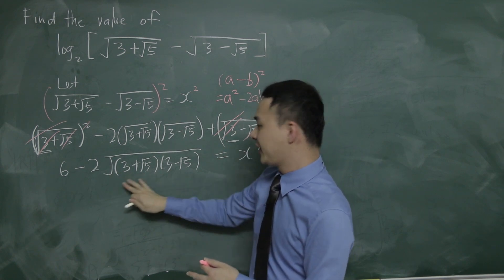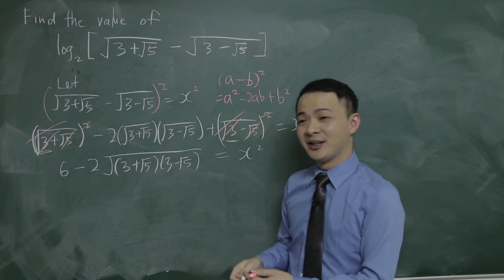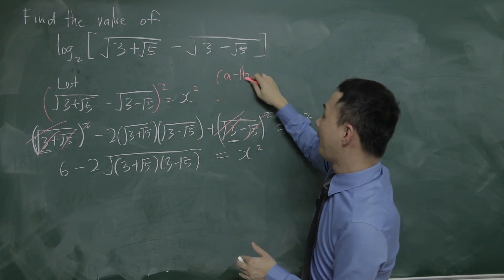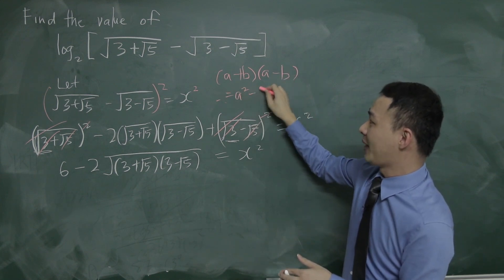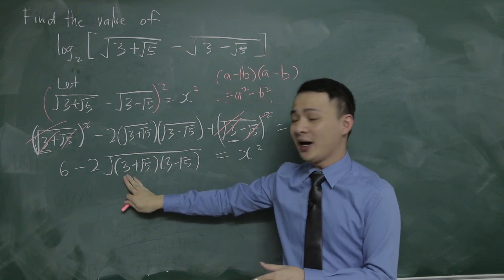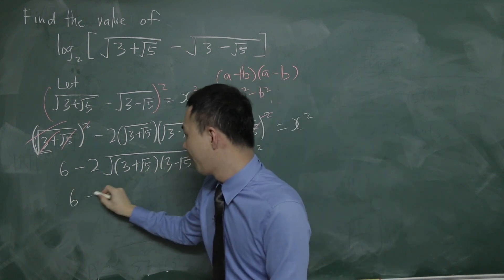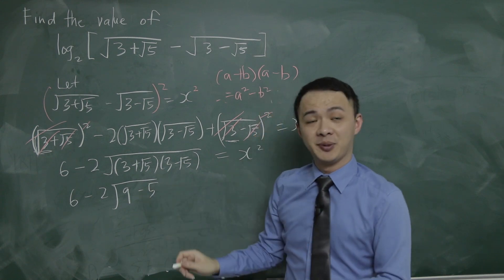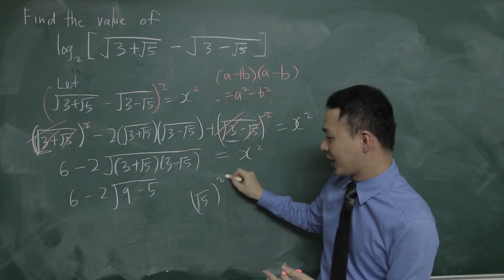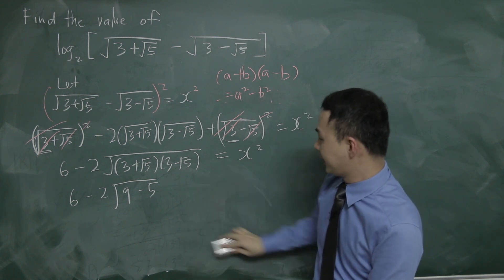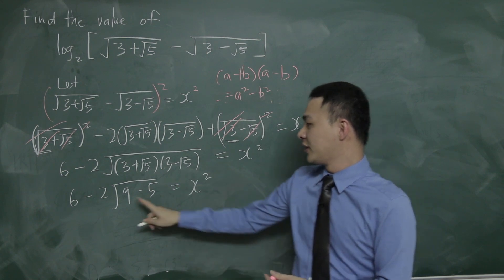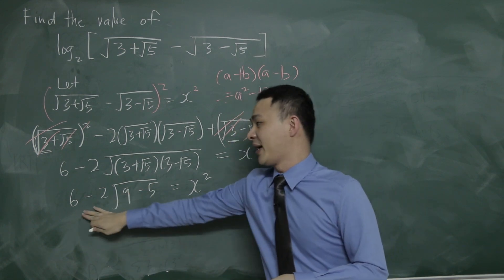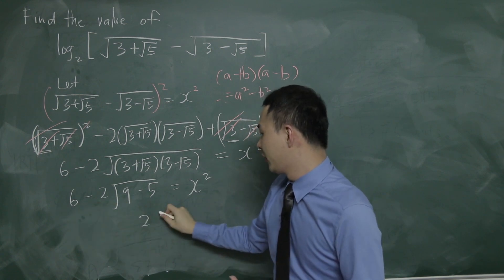I notice that (3+√5)(3−√5) is a difference of squares: a²−b². So (3+√5)(3−√5) = 3² − (√5)² = 9 − 5 = 4. Therefore √4 = 2, so the middle term becomes −2×2 = −4. Putting it together: 6 − 4 = 2, so x² = 2.